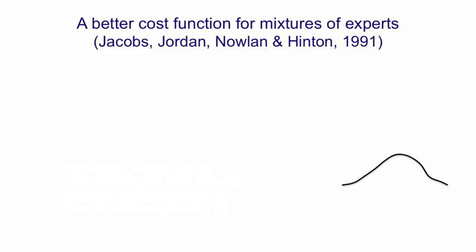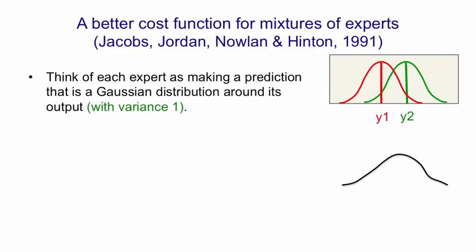Now there's actually a better cost function. It's just more complicated. It depends on mixture models, which I haven't explained in this course. Again, those will be well explained in Andrew Ng's course. I did explain, however, the interpretation of maximum likelihood when you're doing regression as the idea that the network is actually making a Gaussian prediction. That is, the network outputs a particular value, say, y1, and we think of it as making bets about what the target value might be that are a Gaussian distribution around y1 with unit variance. So the red expert makes a Gaussian distribution of predictions around y1, and the green expert makes a Gaussian prediction around y2.